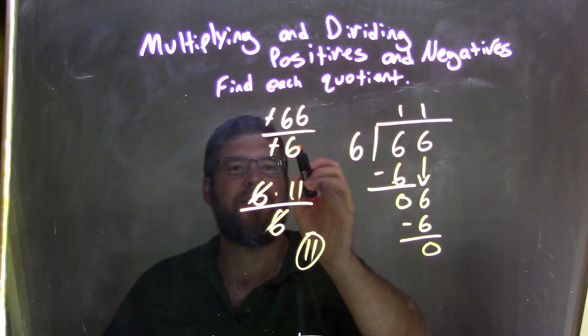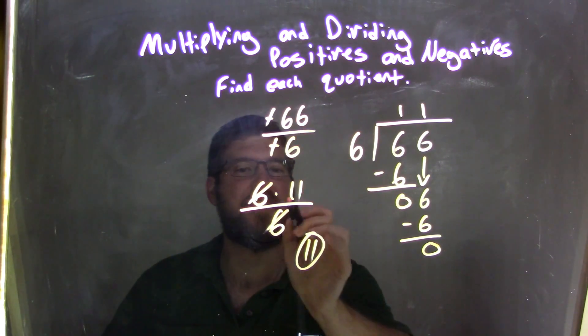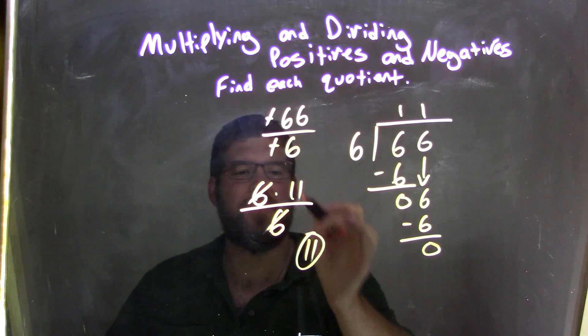So again, let's recap. We had 66 divided by 6. 66 was 6 times 11. Now 6s can cancel. We're left 11.